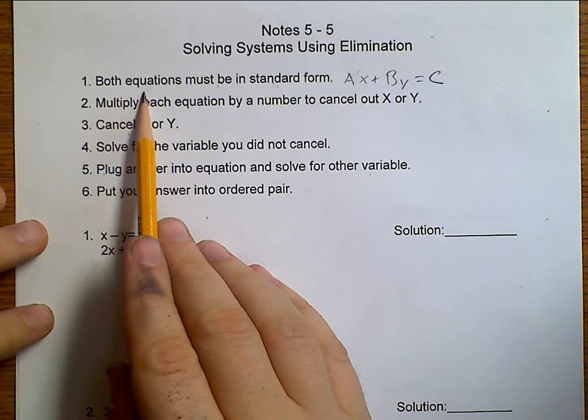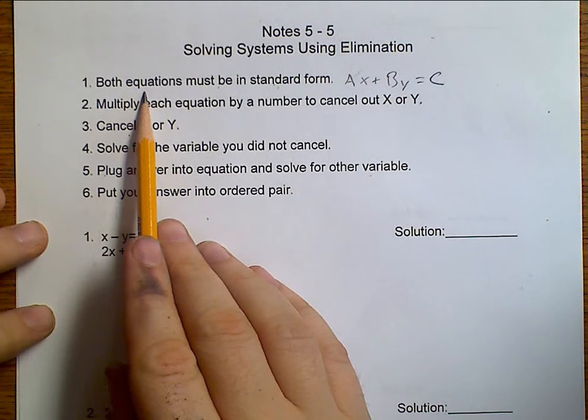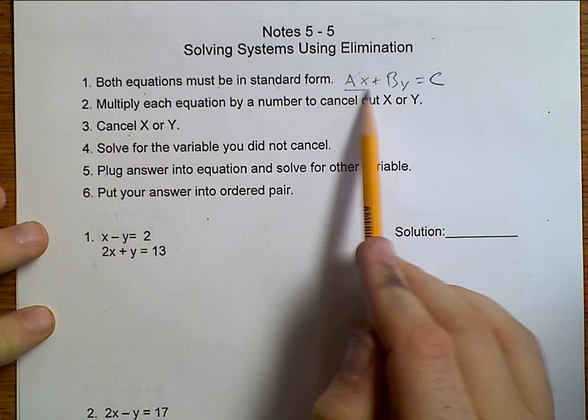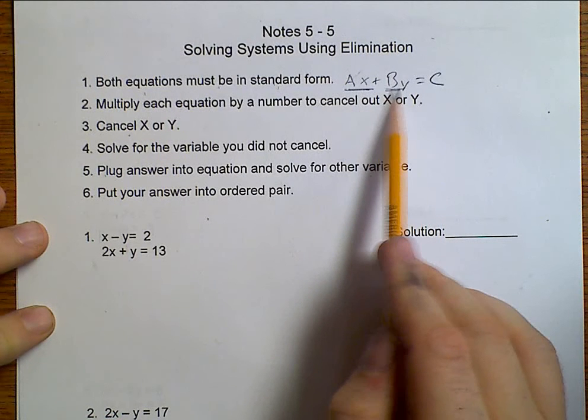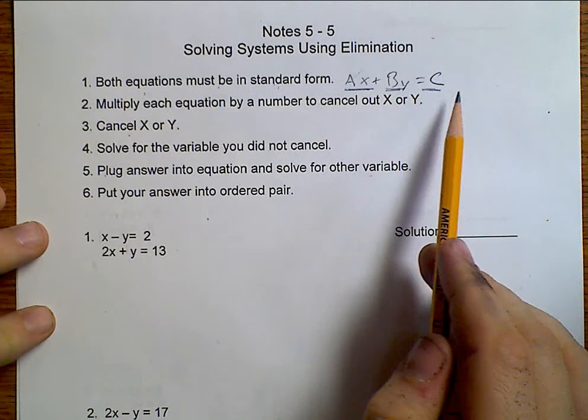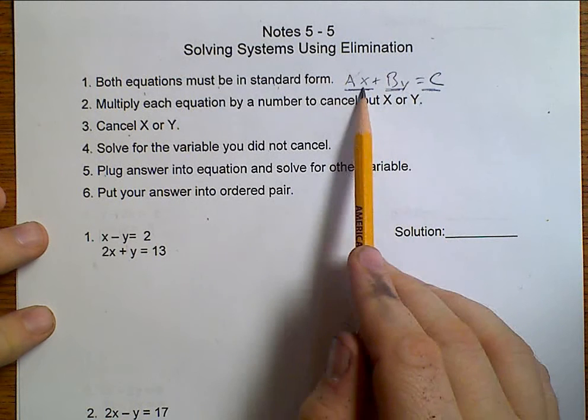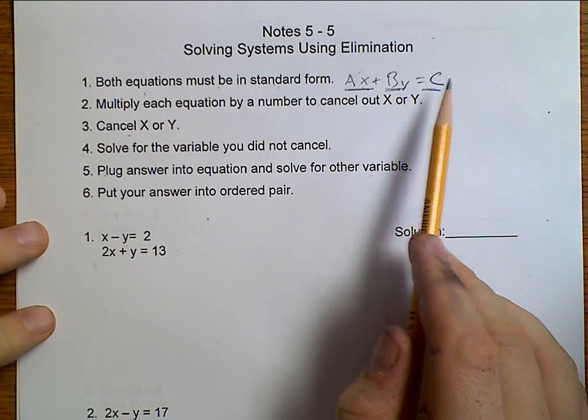First thing is that both equations must be in standard form. That is, they must be Ax plus By equals C, being that we have X first, and then Y, and then equals, and then C.